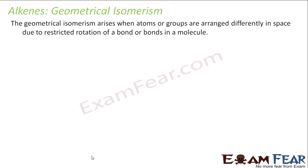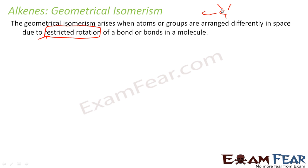Geometrical isomerism arises when atoms and groups are arranged differently in space due to restricted rotation. That's why we didn't have geometrical isomerism in alkanes — because in alkanes all single bonds allow free rotation, with no restriction. But with a double bond, the rotation is restricted. So geometrical isomerism arises because of the difference in arrangement due to restricted rotation.